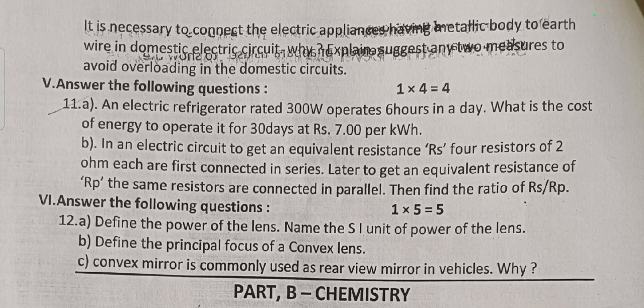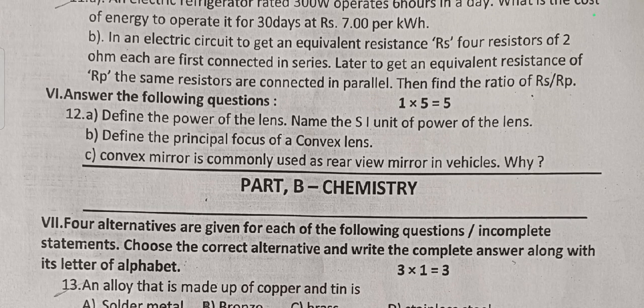Or: why is it necessary to connect electric appliances having a metallic body to earth? Why is there a fire in domestic circuits? Suggest any two measures to avoid overloading in the domestic circuit. Four-mark question: An electric refrigerator rated 300 watts operates 6 hours a day — find the cost of energy to operate it for 30 days at 7 rupees per kilowatt-hour. Or: four resistors of 2 ohms each connected in series give Rs; the same connected in parallel give Rp — find the ratio of Rs to Rp. Five-mark question: Define the power of a lens, name its SI unit, define the principal focus of a convex lens, and state why a convex mirror is commonly used as a rear-view mirror in vehicles.